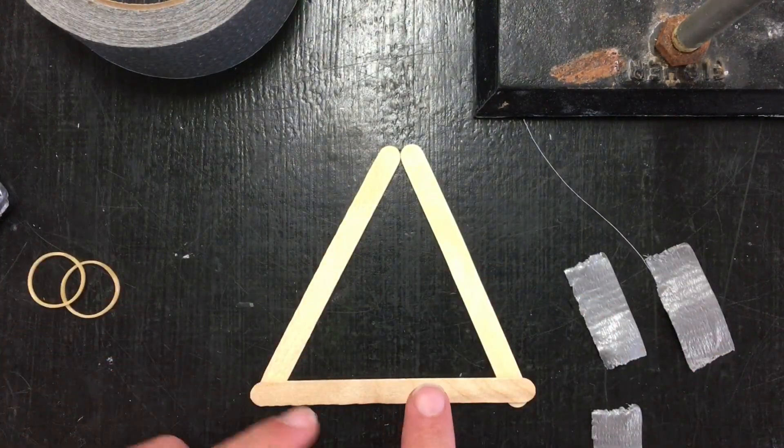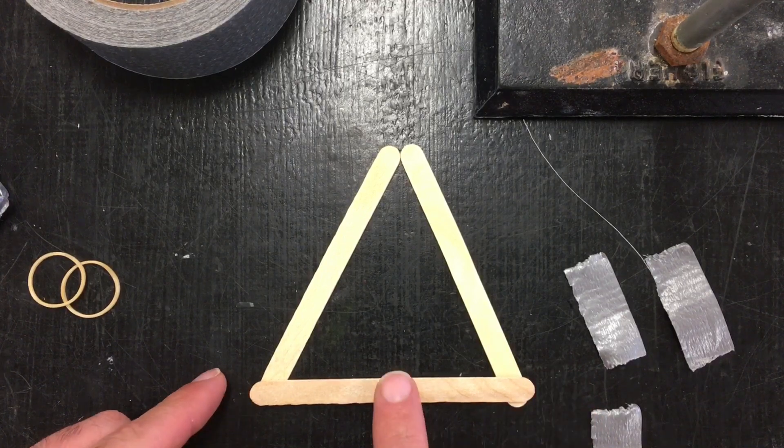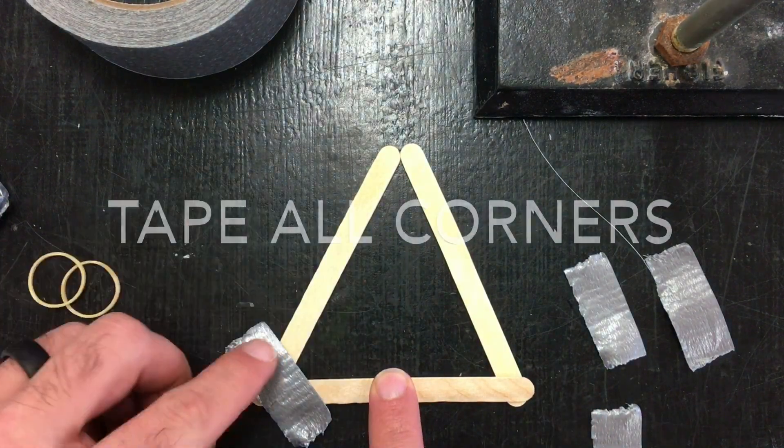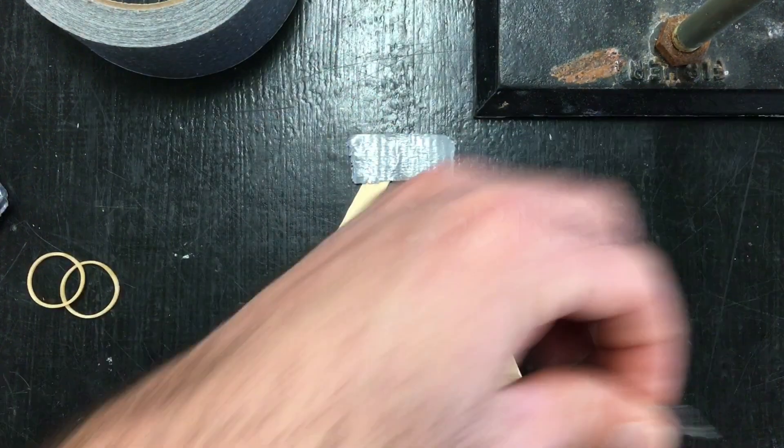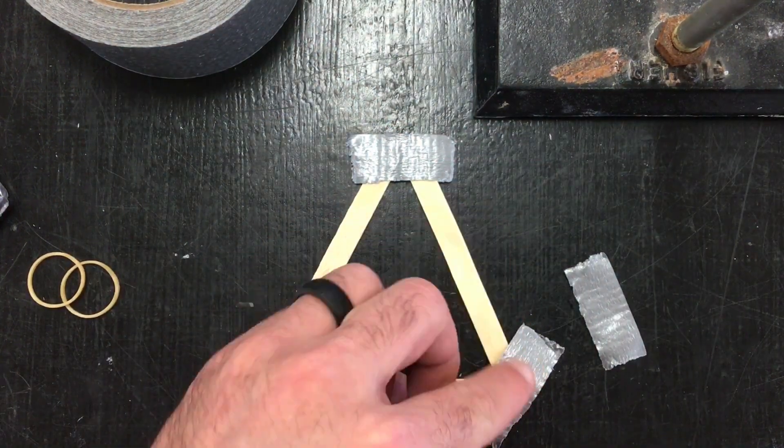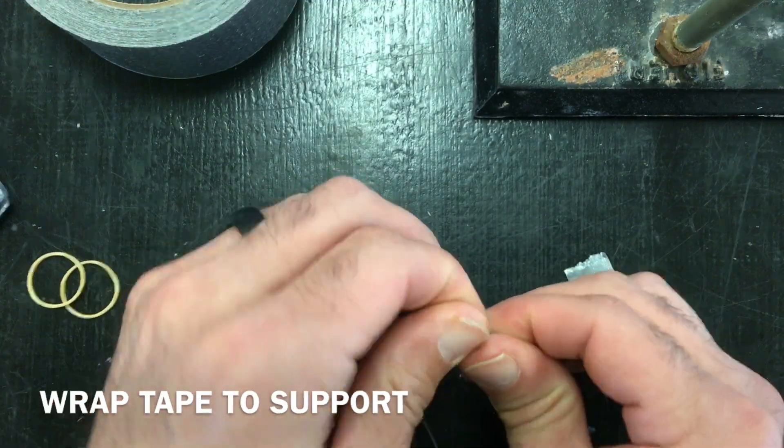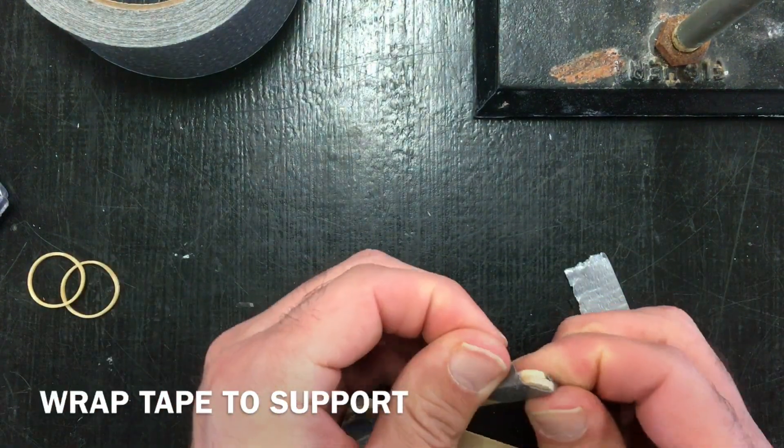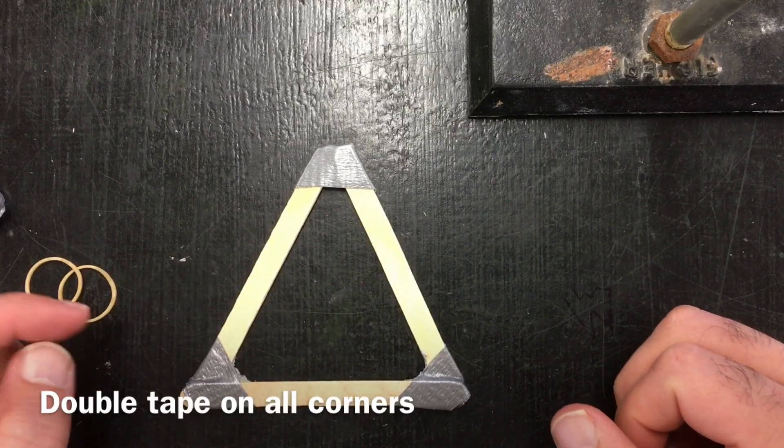So now, when I tape my equilateral triangle as my base, I'll put a little pressure on the back. So now I've got the tape doubled up on all three corners.